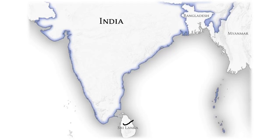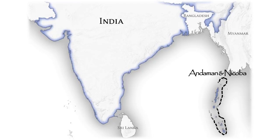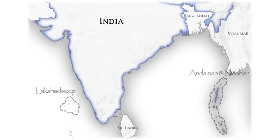To the south of India on the east side we have Sri Lanka. India and Sri Lanka are separated by the Gulf of Mannar and the Palk Strait. There are Indian islands both in the Bay of Bengal and the Arabian Sea. In the Bay of Bengal we have the Andaman and Nicobar Islands, and in the Arabian Sea we have the Lakshadweep Islands.